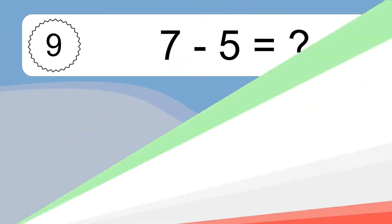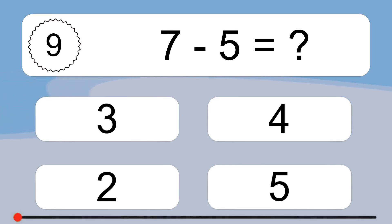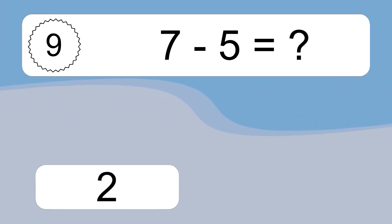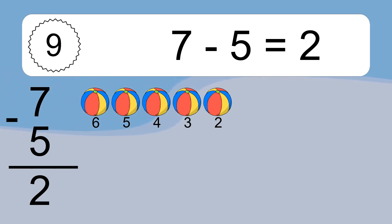7 minus 5 equals what? 7 minus 5 equals 2. Let's count it: 6, 5, 4, 3, 2.